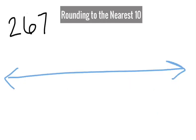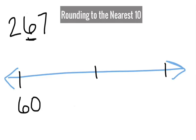Now let's round two hundred sixty-seven to the nearest ten. Again, I look in my tens place for my clue of what multiple of ten comes first. Because I have six in my tens place, I know I must have sixty, but I can't forget my two hundred. So I put my two hundred there, so I have two-sixty as the multiple of ten that comes before two sixty-seven. Two sixty plus ten is two seventy.